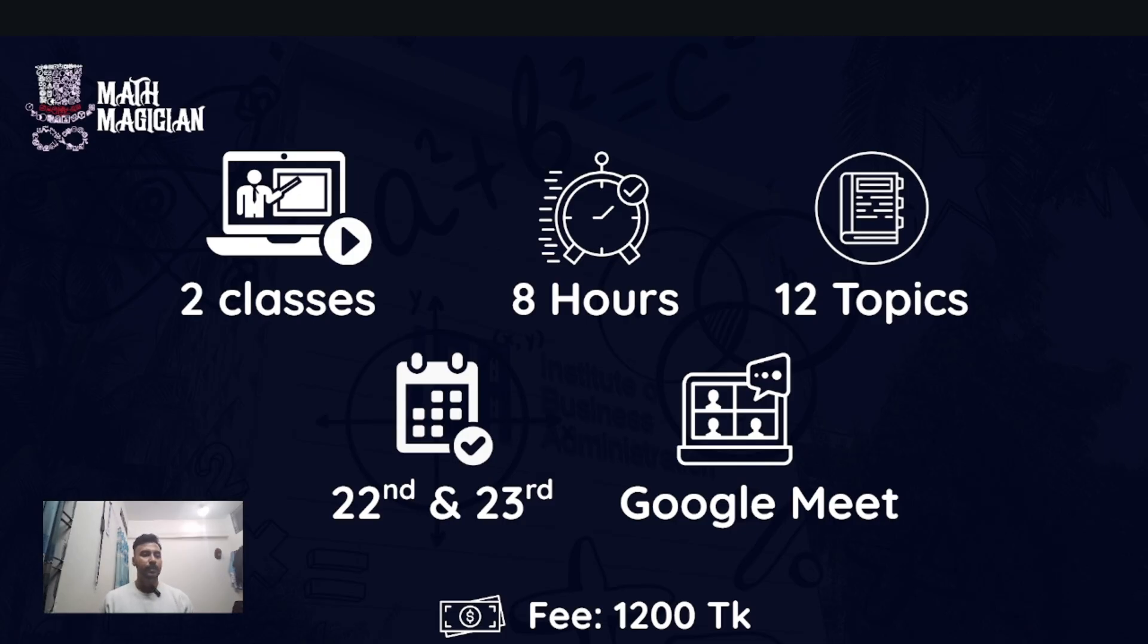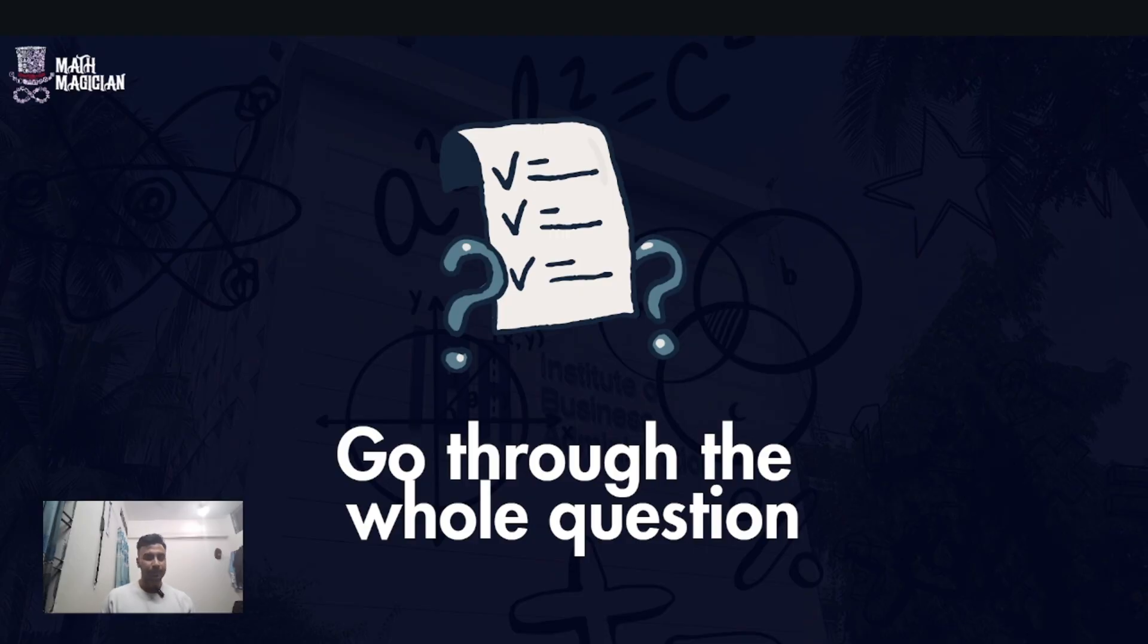The main point: at first, skim through the whole question. The whole question is very lengthy. Skim through the whole question to figure out the topic - whether it's permutation combination, numbers, or average. Just get an overall idea so you can tackle that particular topic. Get an overall idea and you'll be in the safe zone.